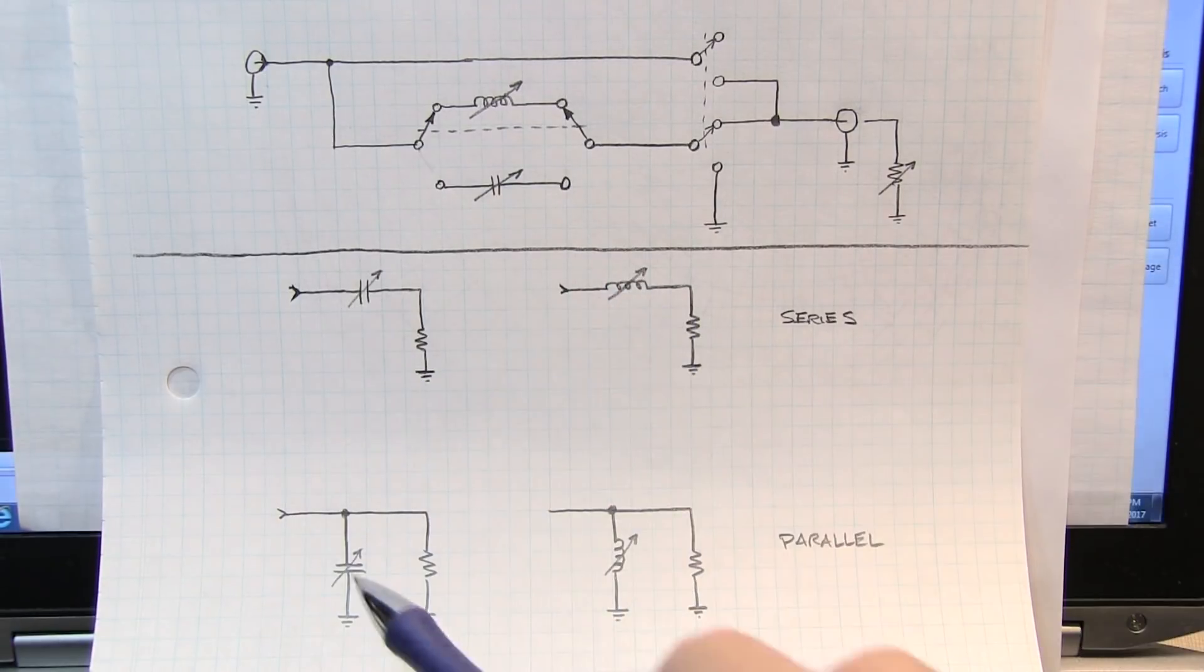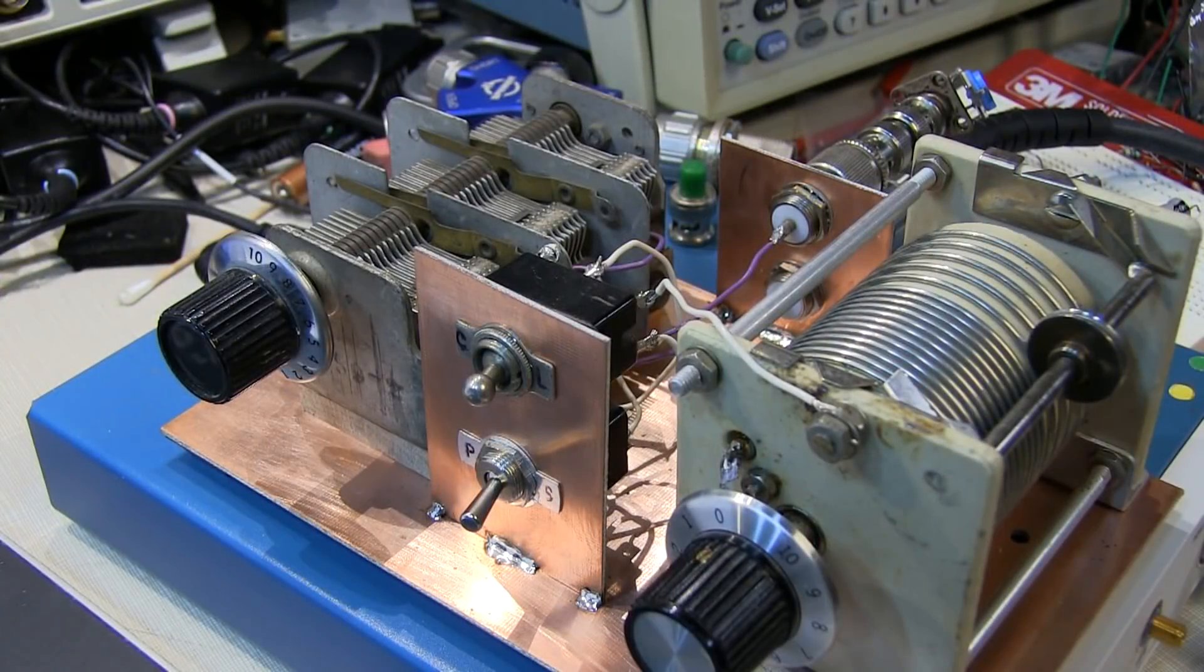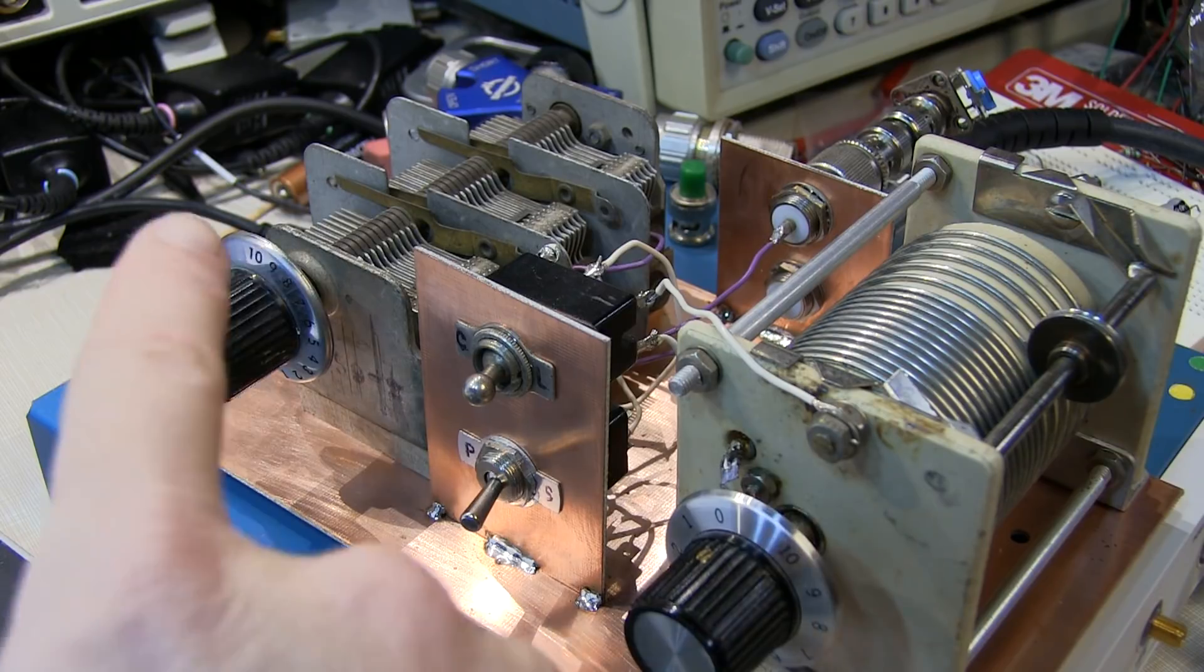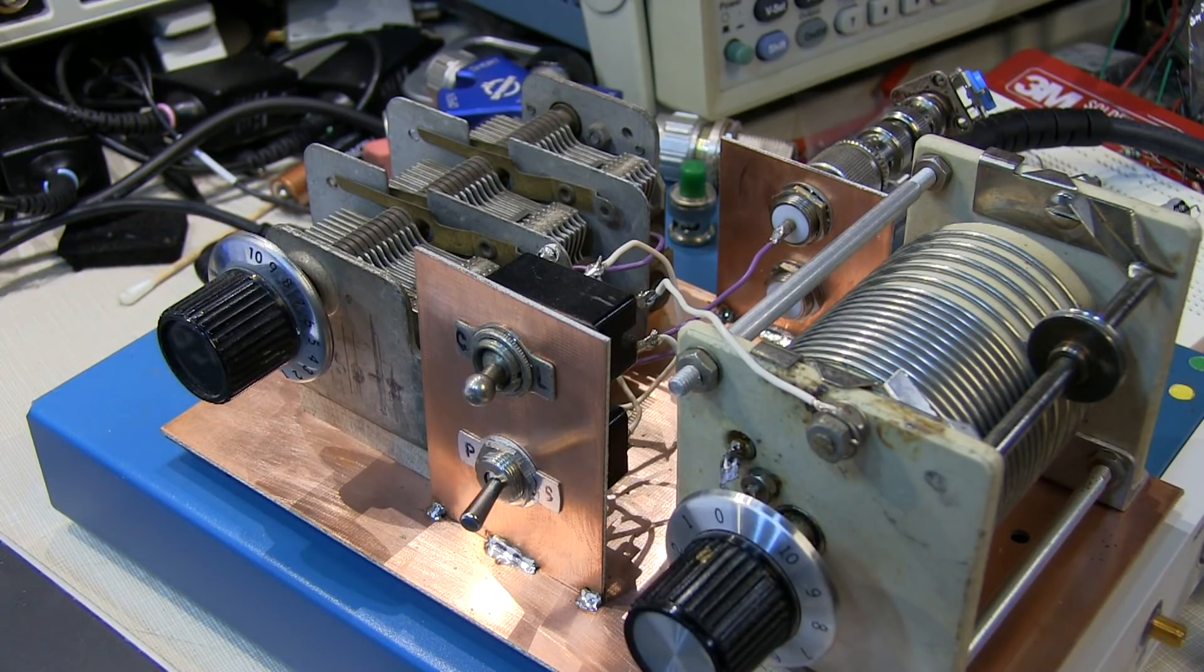Therefore we can represent each of these four situations: a series capacitor, series inductor, shunt capacitor, and shunt inductor with respect to our load. This demonstrator was built with some very large-scale components, so it could be used effectively in front of a live audience at ham radio meetings. As such, it's really only usable up to a couple of megahertz.